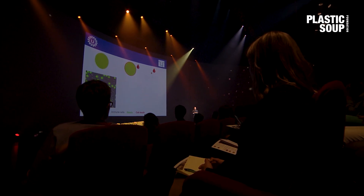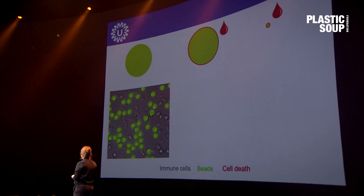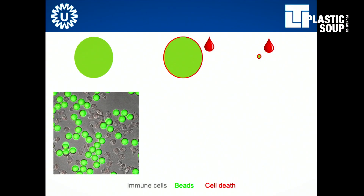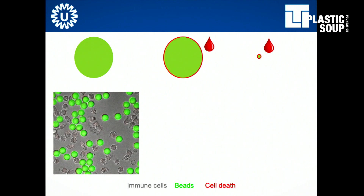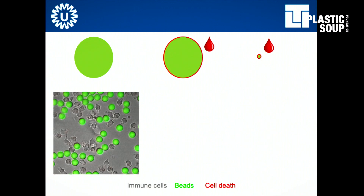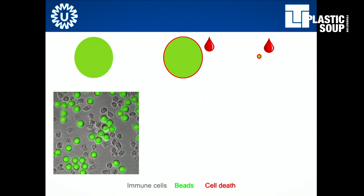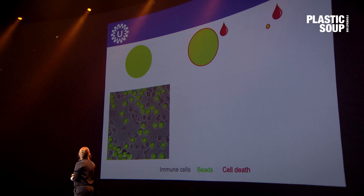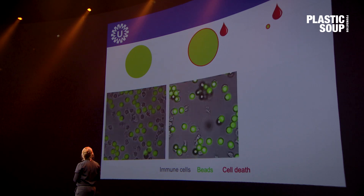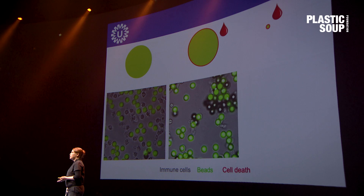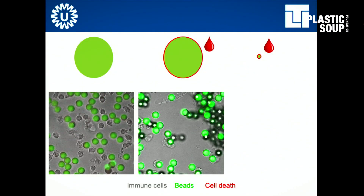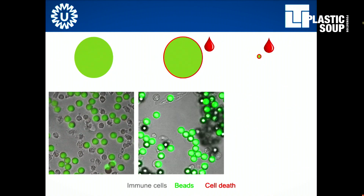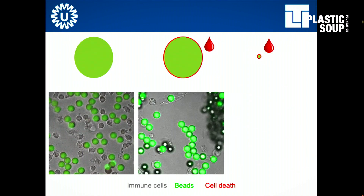Here you can see a microscopy picture. In grey are the immune cells and in green are the microplastics — these are the bigger beads, about the same size as the cells. In the uncoated or clean microplastics condition, the immune cells bump into these microplastics but they're not engulfing them like they do with bacteria. But when we have the microplastics coated with blood components, we see a very different picture — these microplastics are now being engulfed by immune cells.